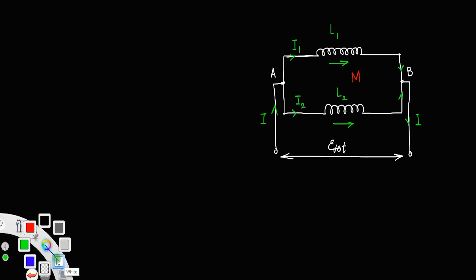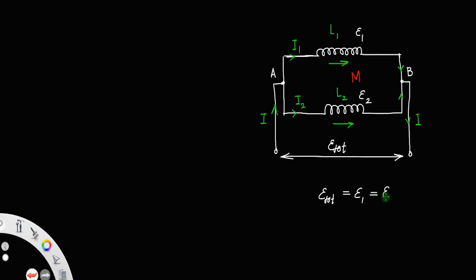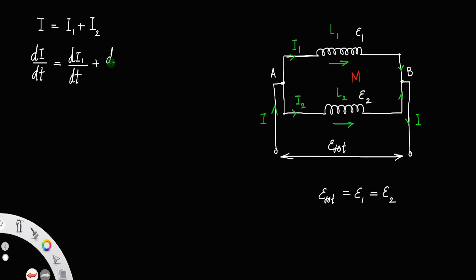For a parallel connection, EMF remains the same. Calling them E1 and E2, we know that E_total equals E1 equals E2, since for a parallel connection the EMF remains the same. The total current at junction A gives us I equals I1 plus I2. Differentiating with respect to t: dI/dt equals dI1/dt plus dI2/dt. Call that equation number 1.